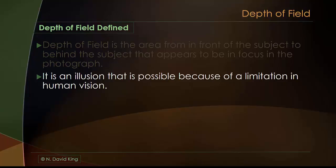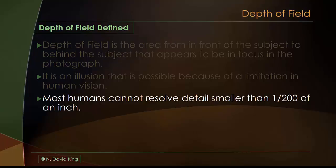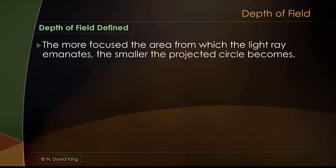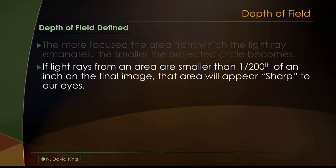Depth of field is actually simply an illusion, but it's made possible because of a limitation in human vision. Most humans simply can't resolve details smaller than one two-hundredth of an inch. There are some that can see a little better, some that can't quite see that, but on average most of us can only resolve down to about a two-hundredth of an inch, and then things start to blend together. Every light ray reflecting off a subject comes back through the lens and projects on the image plane as a small circle — whether that image plane is film or chip, it works exactly the same. The more focused the area from which that light ray comes, the smaller the projected circle becomes. If light rays from some area on the subject are projected on the image plane as smaller than a two-hundredth of an inch, that area will appear sharp to our eyes.